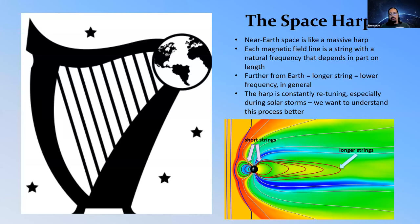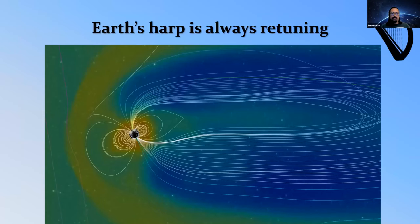From the short to long strings, we can hear vibrations using satellites. This harp is constantly retuning — the strings are changing length, vibrating at different times and amounts. We need to be able to monitor this, and that's what you're listening to as part of the HAARP project.